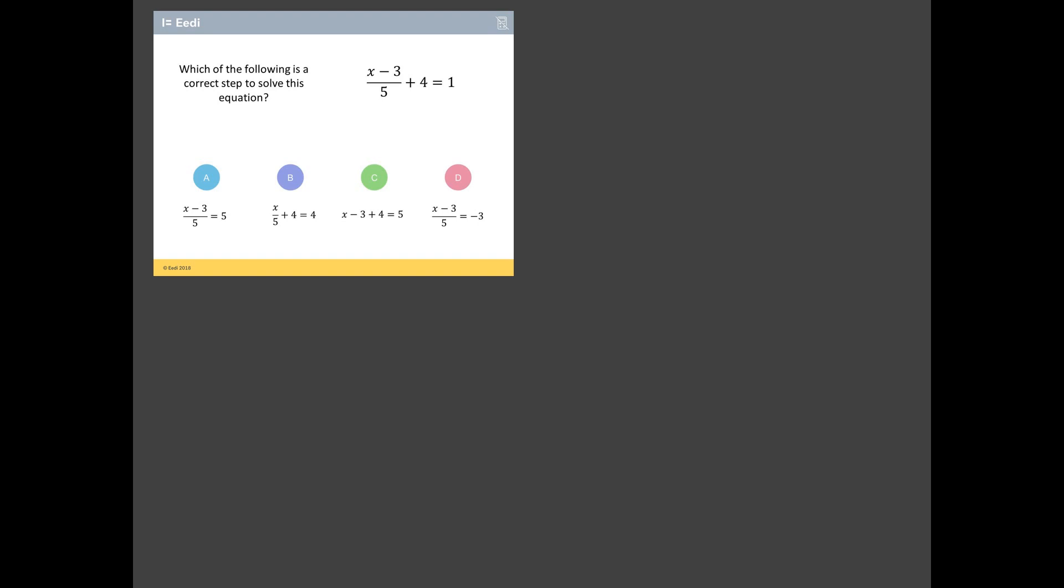Which brings us to the worst answered question. And it is this one, a bit of algebra. So which of the following is a correct step to solve this equation? And we've got four options. Well, I think the easiest thing to do here is to go through each of these options in turn. And we'll see what the students attempted to do and discuss whether we think it's a valid thing to do.